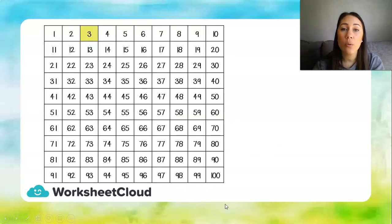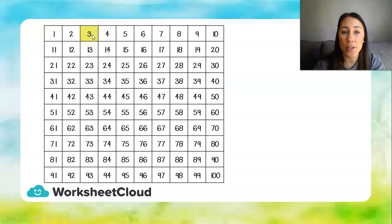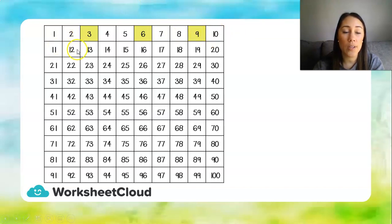Now that you've got everything you need, we're going to wake our brains up by counting together in threes. Counting in threes is sometimes a little more difficult because it takes a long time for the pattern to repeat. So we're going to start at three, add another three each time: three, six, nine, twelve, fifteen, eighteen, twenty-one, twenty-four, twenty-seven, and thirty. Well done — that's where our pattern ends.